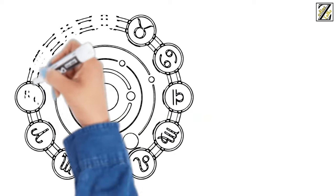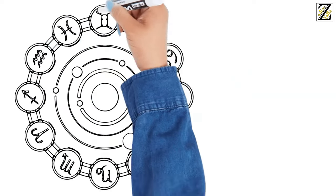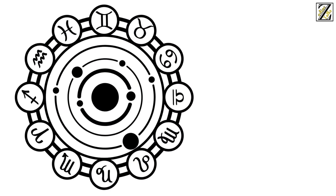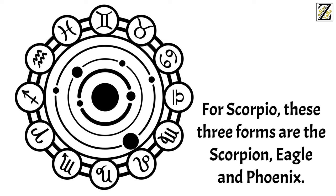For example, the crab for Cancer, the scorpion for Scorpio, the fish for Pisces. But there are two more forms to each sign, and these forms are the ones which are less known. For Scorpio, these three forms are the scorpion, eagle, and phoenix.